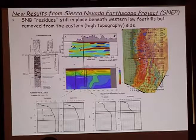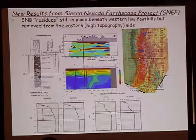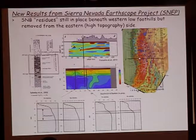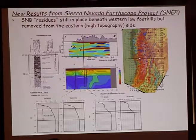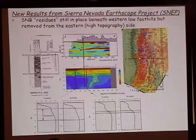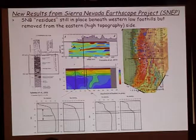The fast material under the foothills is our interpretation of the eclogitic root of the batholith, still in place. Over the eastern high-elevation region, that eclogitic root has been removed and replaced by hot asthenosphere sometime in the past. A xenolith locality marked in the figure brought up garnet pyroxenites from about 40-80 km depth about 8 million years ago. In the Owens Valley, from the same depth range, Pliocene and Quaternary volcanics brought up spinel peridotites instead.